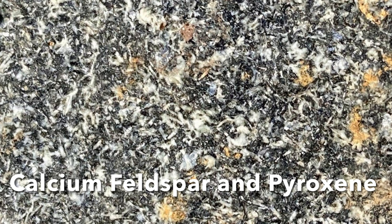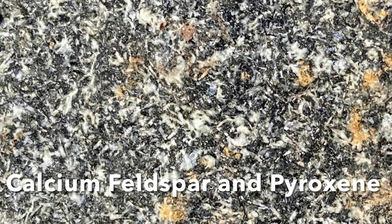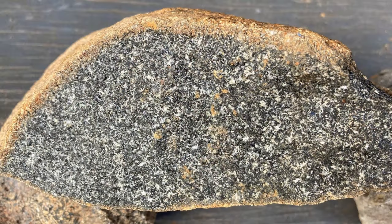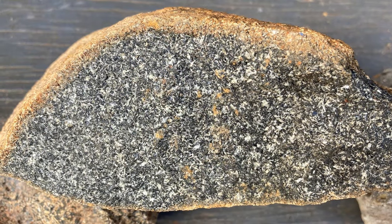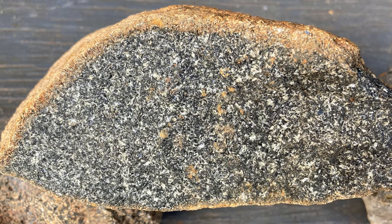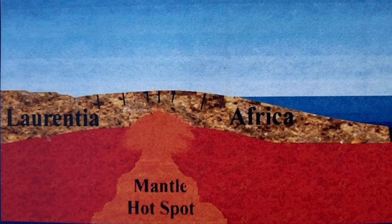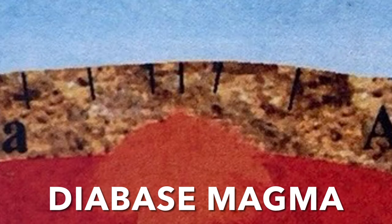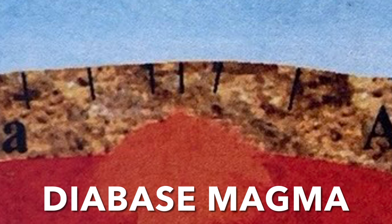Here is a close-up of Diabase. The white mineral is calcium-rich feldspar. The black mineral is pyroxene, which is very high in iron and magnesium. You will also notice that Diabase is a relatively dark rock, as are most of the rocks that come from rifting. Here is a picture of the supercontinent Pangaea with a mantle hotspot getting ready to bust it into pieces, and that molten magma right under the continental crust is made of Diabase magma.